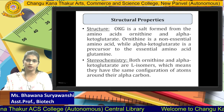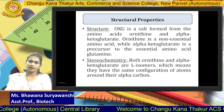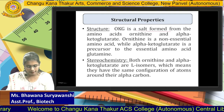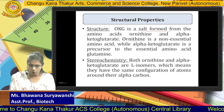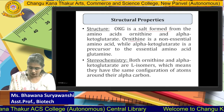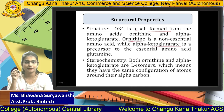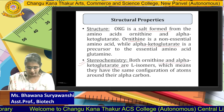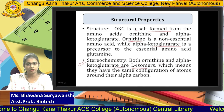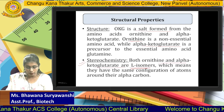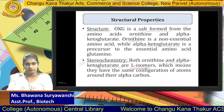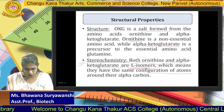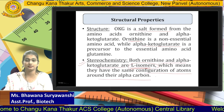Coming to the structural properties: OKG is a salt formed from ornithine and alpha-ketoglutarate. Ornithine is a non-essential amino acid, while alpha-ketoglutarate is a precursor of the essential amino acid glutamine. OKG also has stereochemistry involving both ornithine and alpha-ketoglutarate as L-isomers — like amino acids, they are present in L-stereochemistry, with the same configuration of atoms around their alpha carbon.